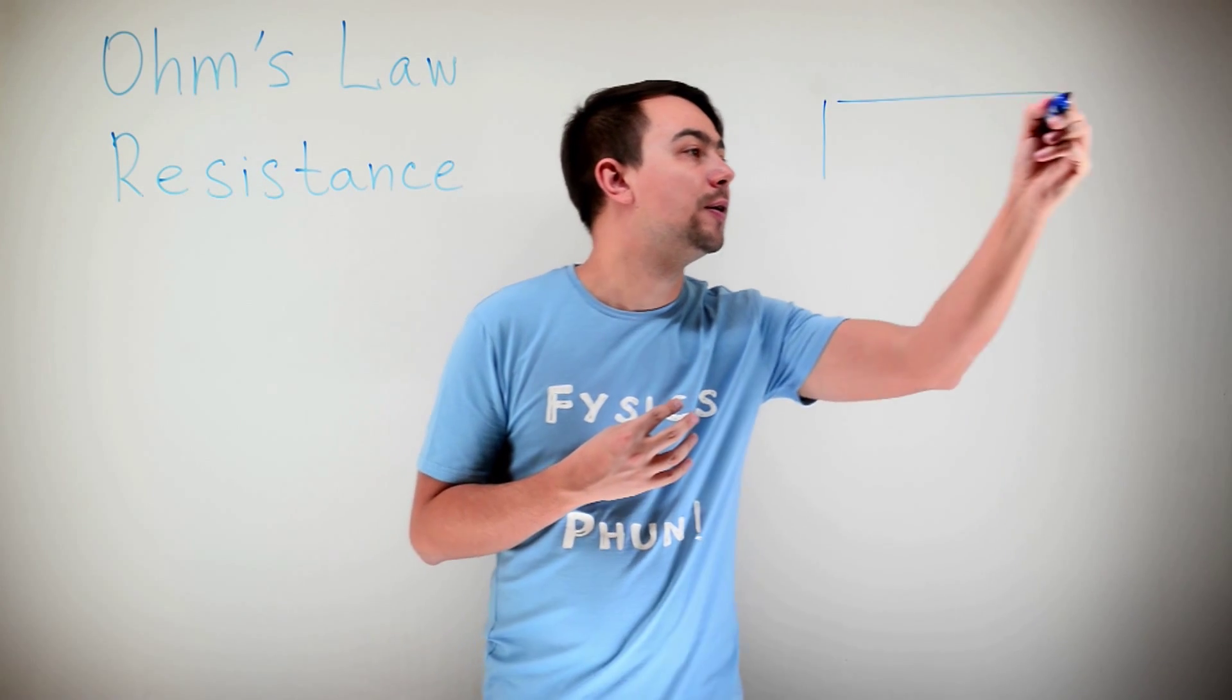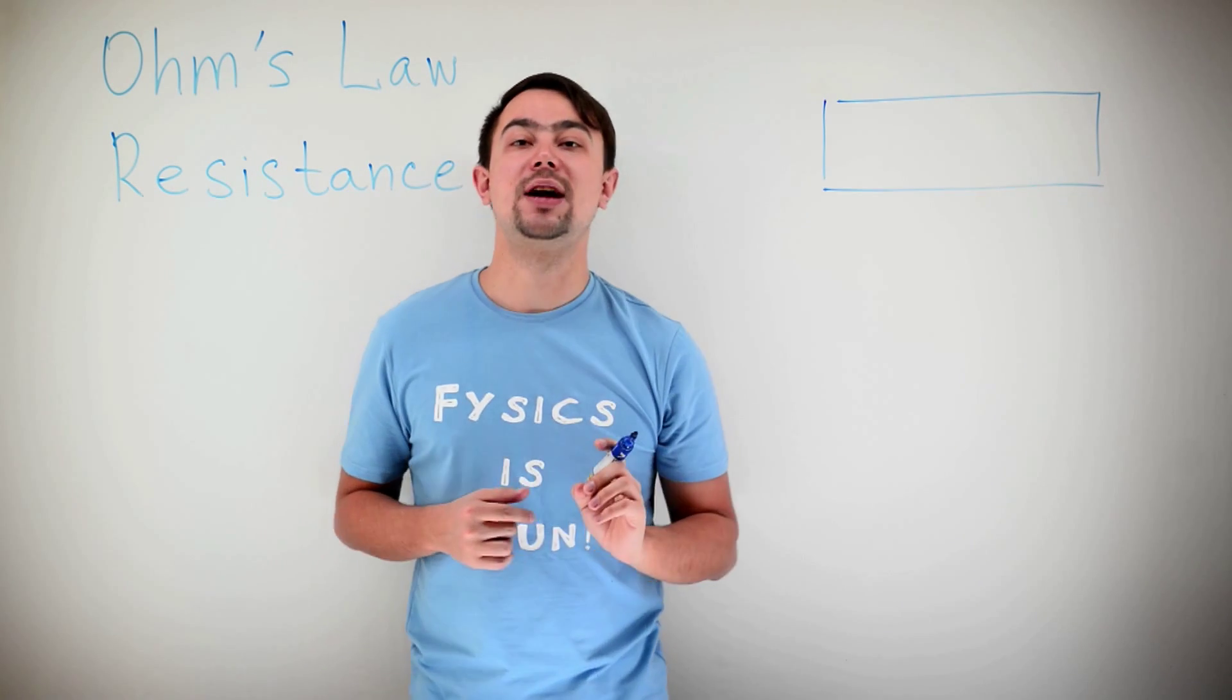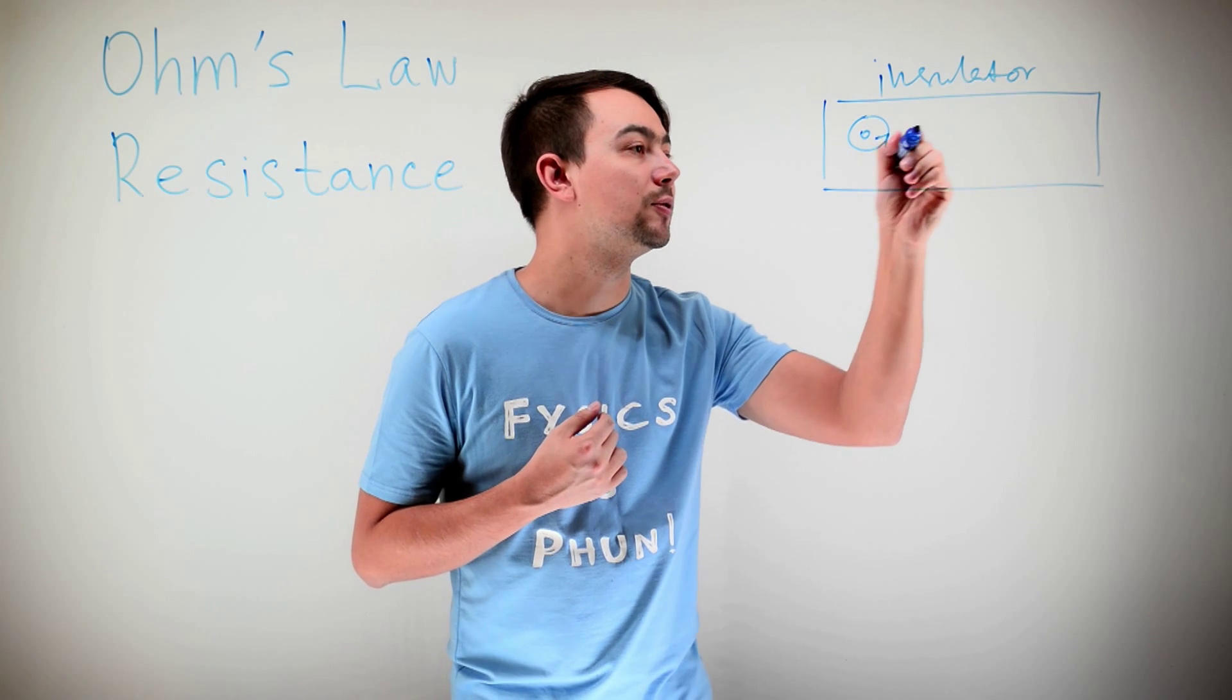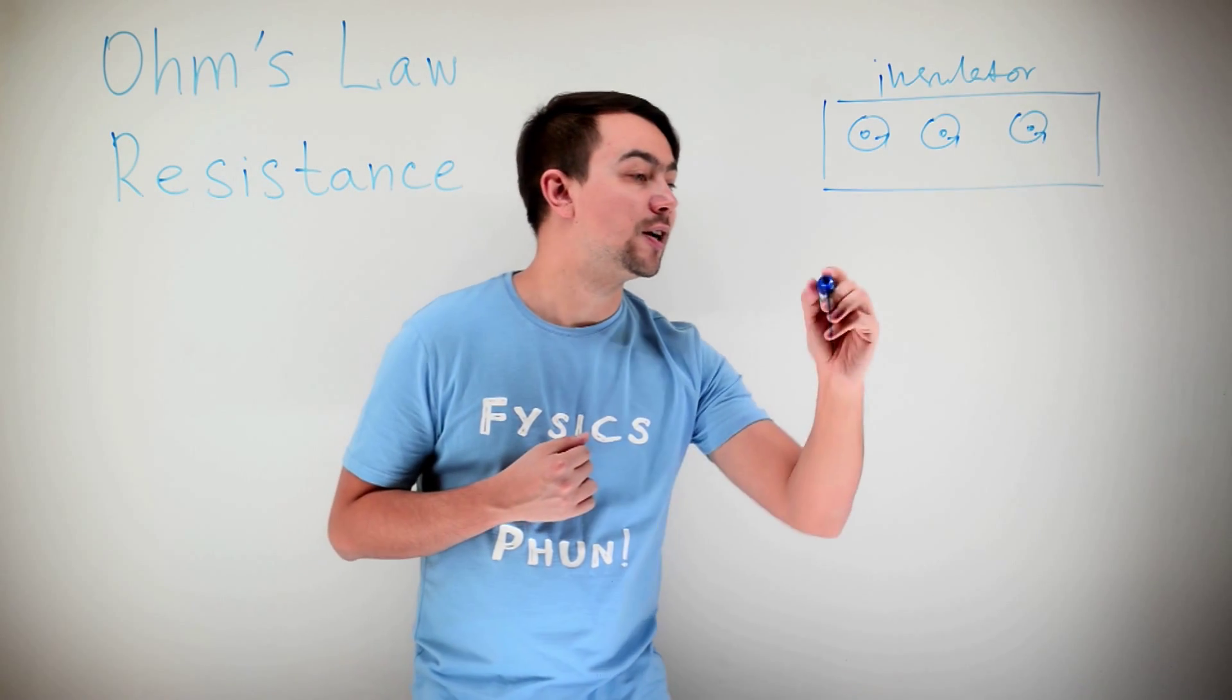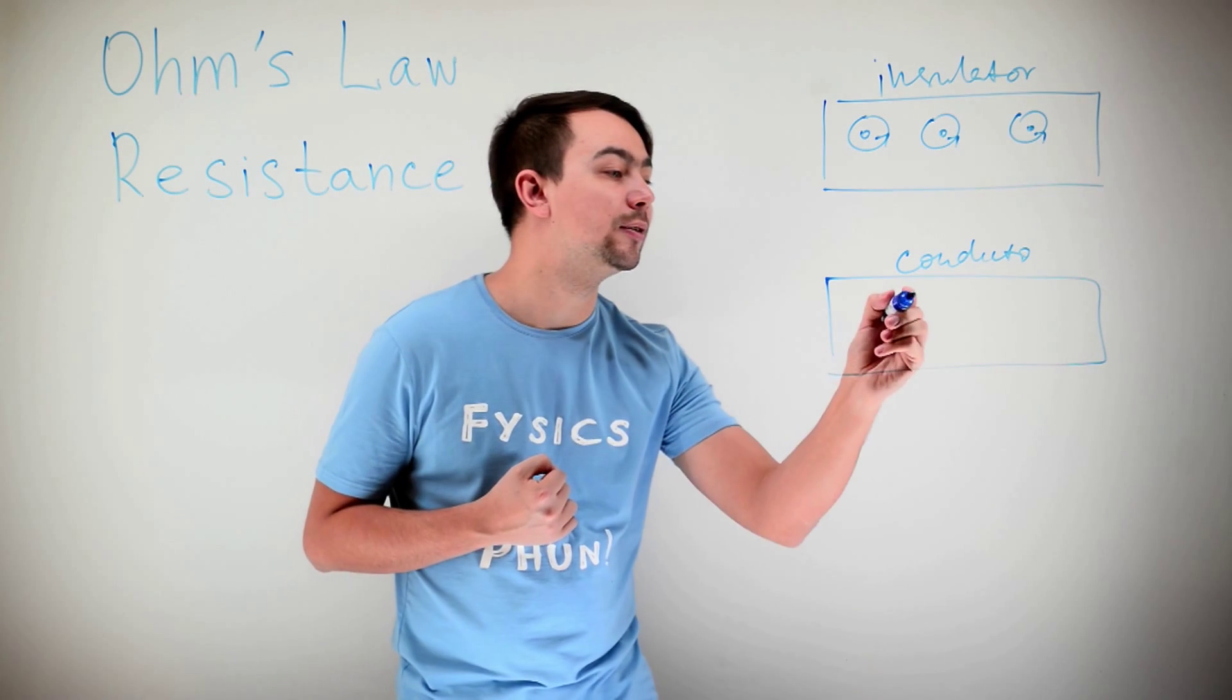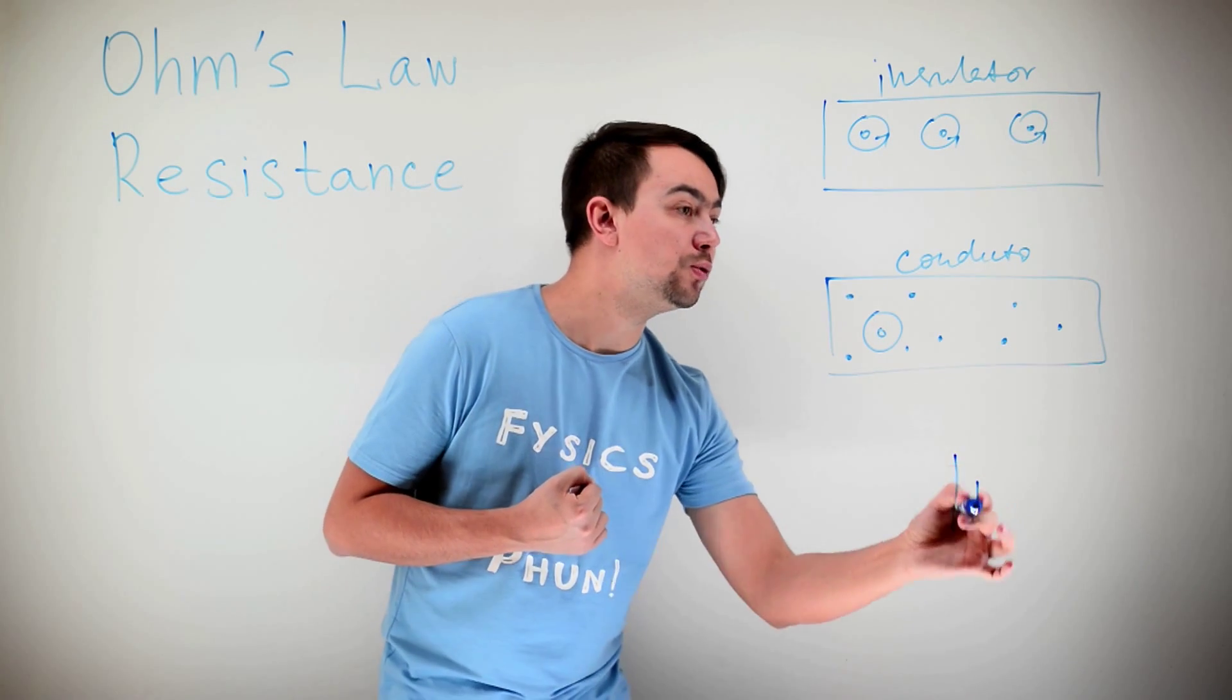Everything consists of atoms. Atoms have a positively charged nucleus and negatively charged electrons which rotate around the nucleus. In an insulator, all electrons rotate around the nucleus. But in a conductor, the electrons rotate around the nucleus, but not all of them. Some of them are called free. They're not tied to the atom. So conductor contains free electrons.